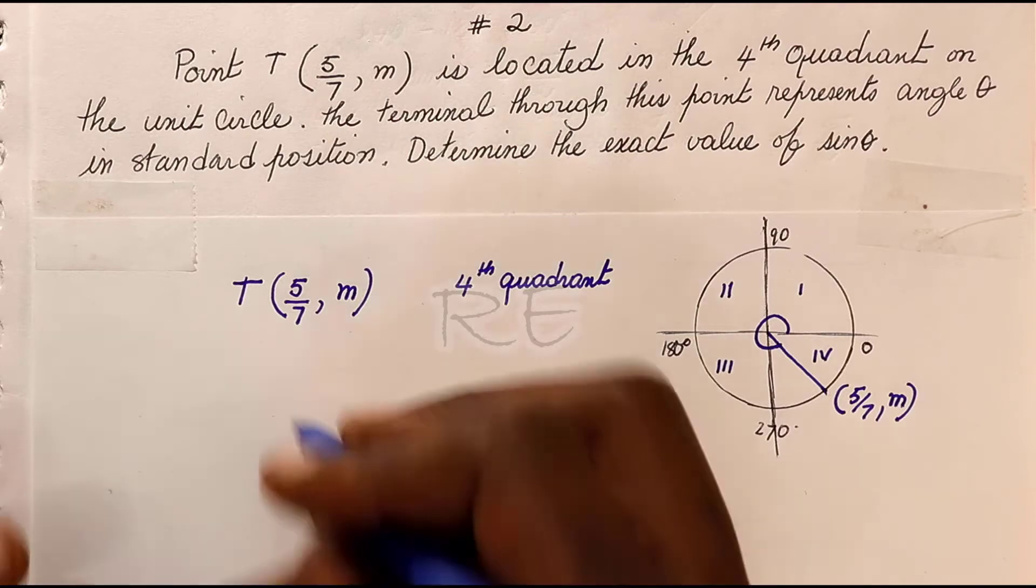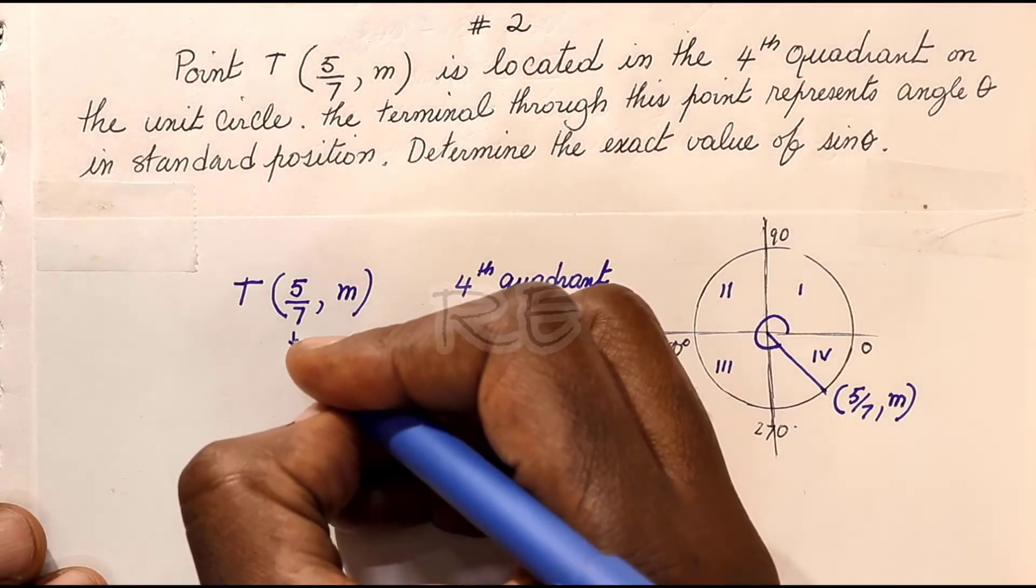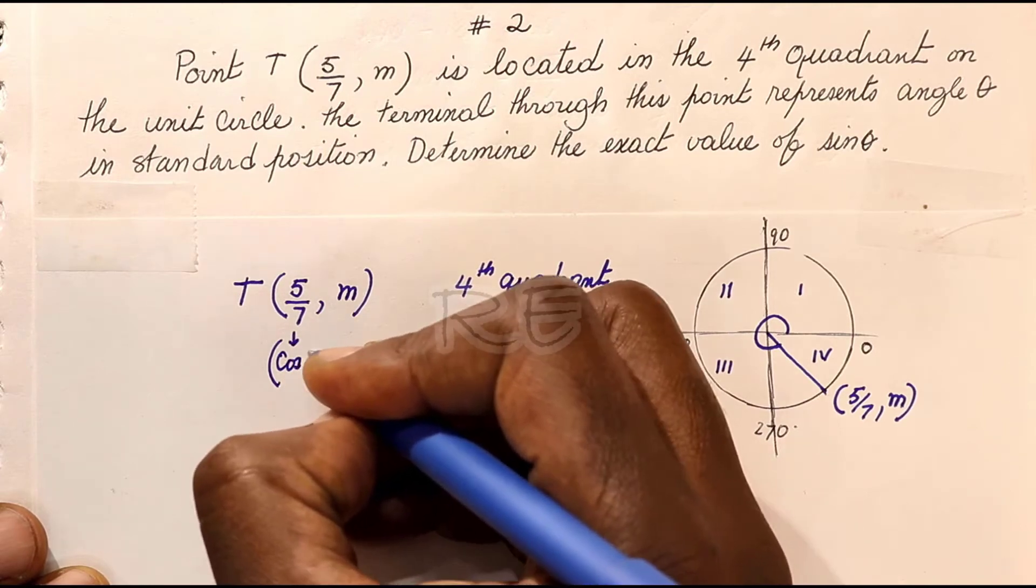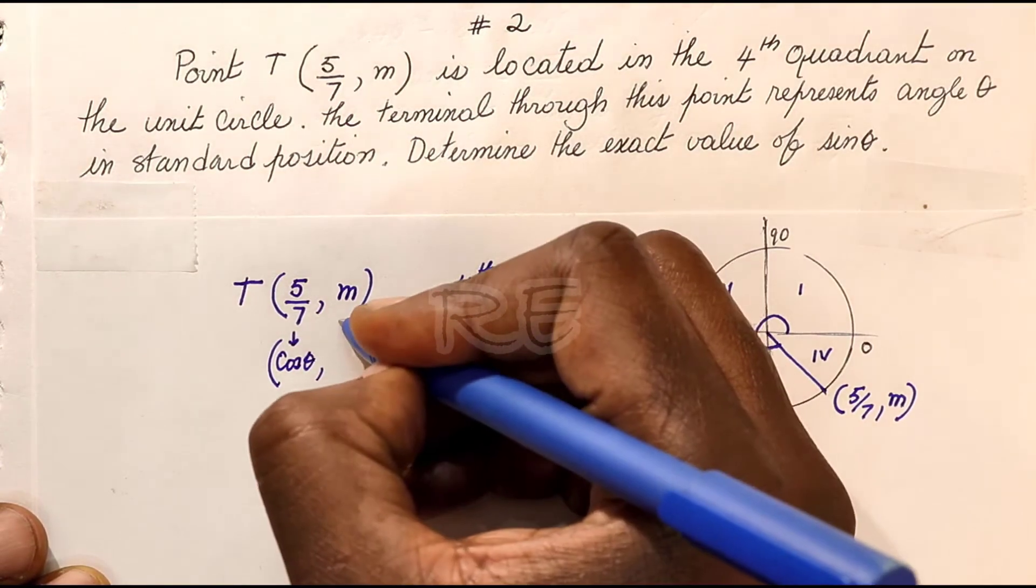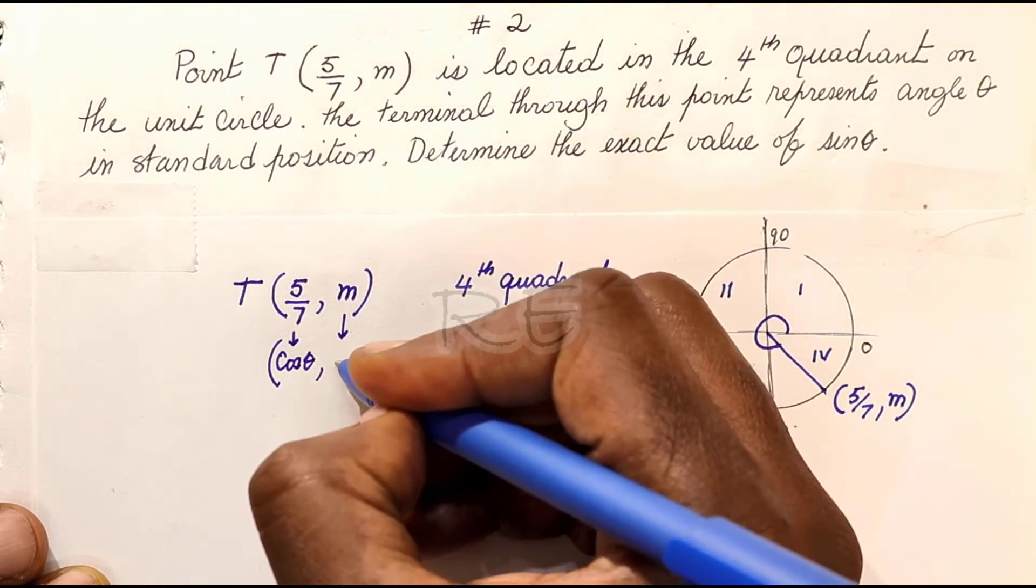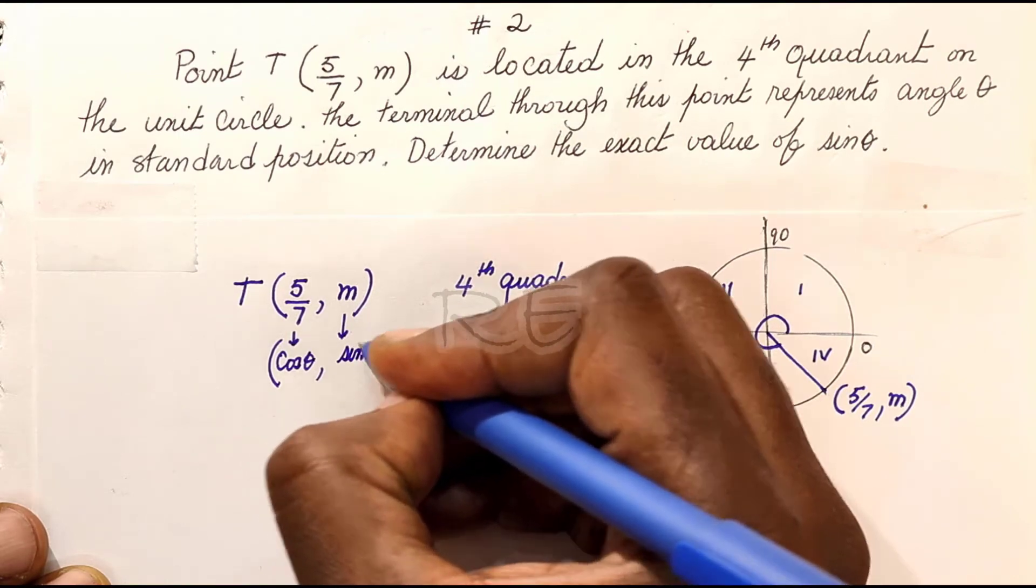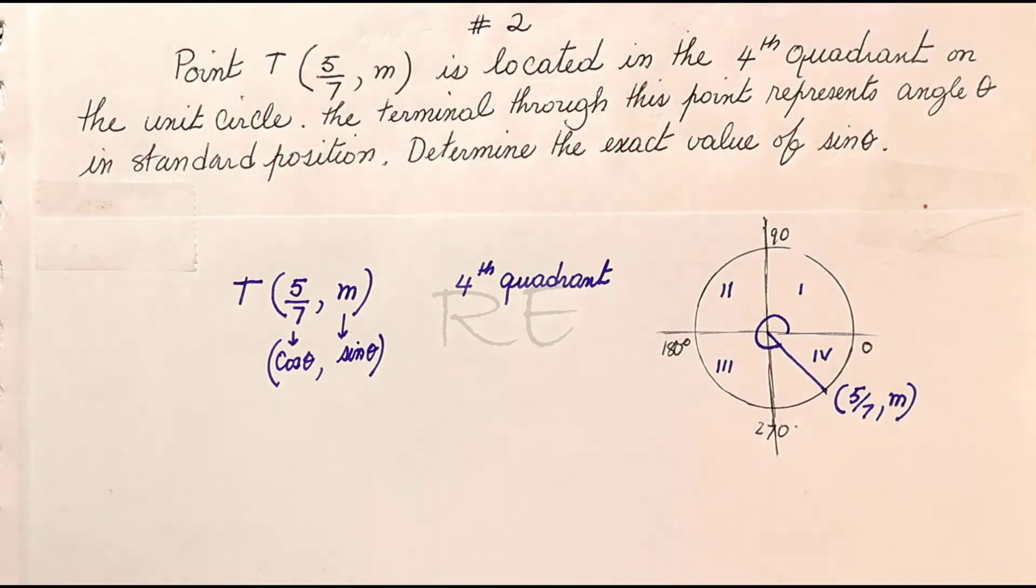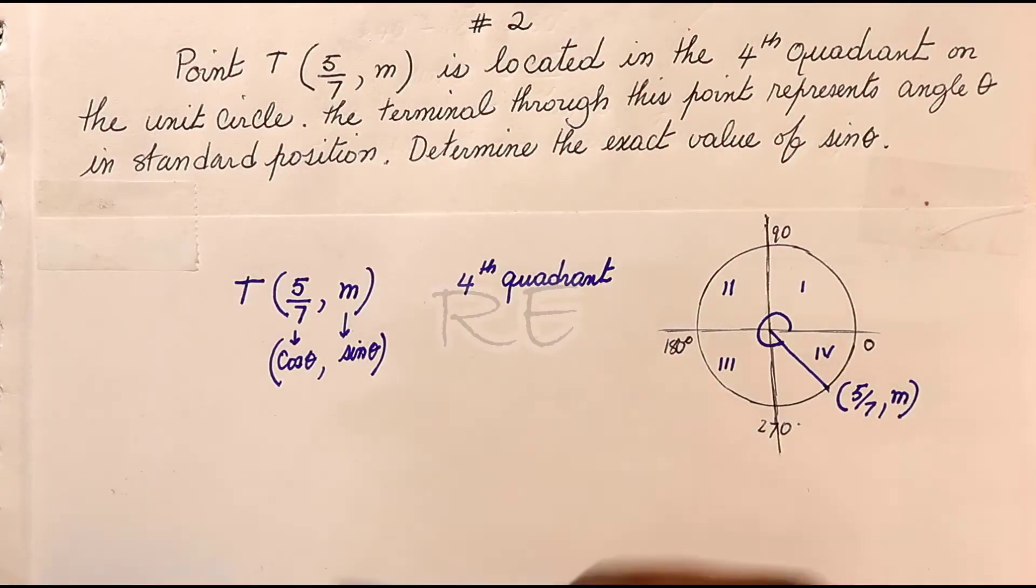We need to find the exact value of sine of angle theta. In the unit circle, the X coordinate represents cosine theta and the Y coordinate, which we don't have, represents sine theta.